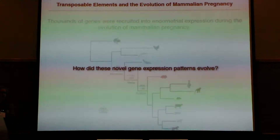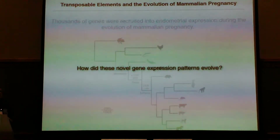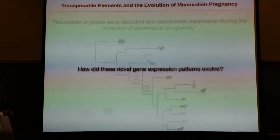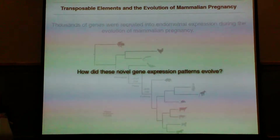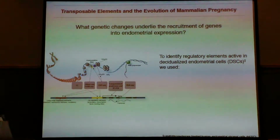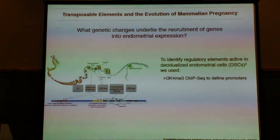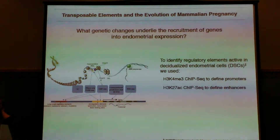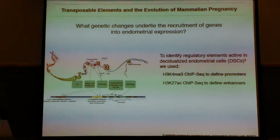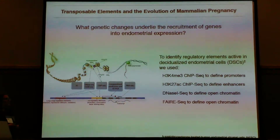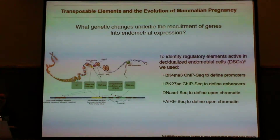I decided to look at cis-regulatory regions to try to answer this question. We identified all cis-regulatory regions within the decidual cell type in human decidual cells, using H3K4 trimethylation ChIP-seq to identify promoters, H3K27 acetylation ChIP-seq to identify enhancers, and DNase hypersensitivity to define open chromatin regions.